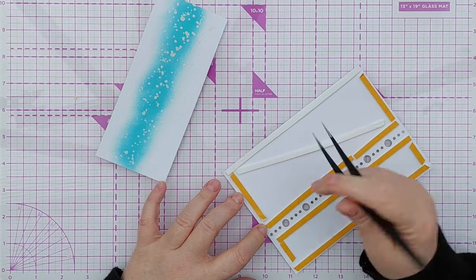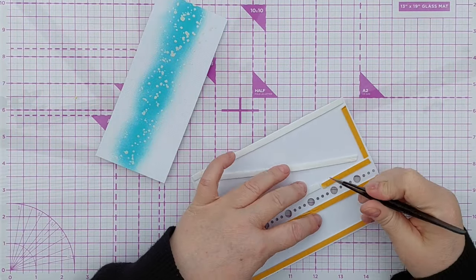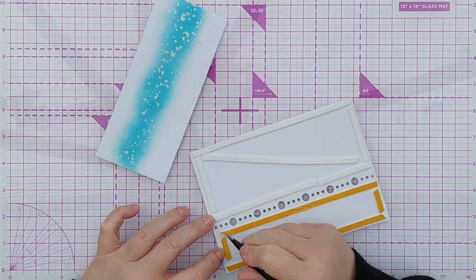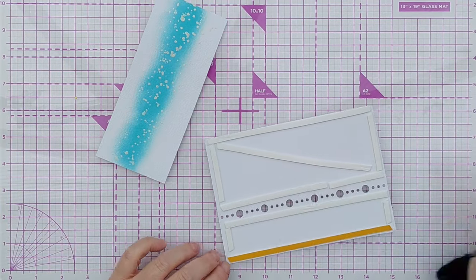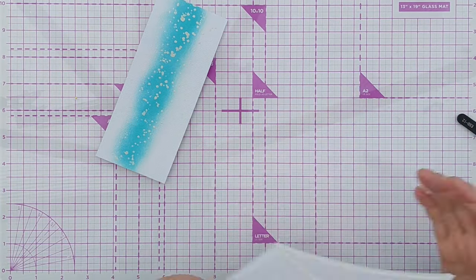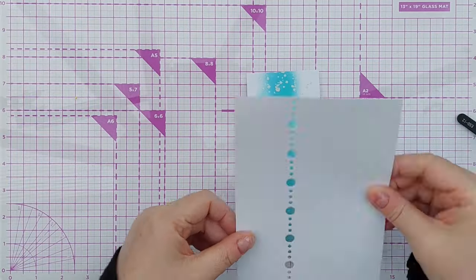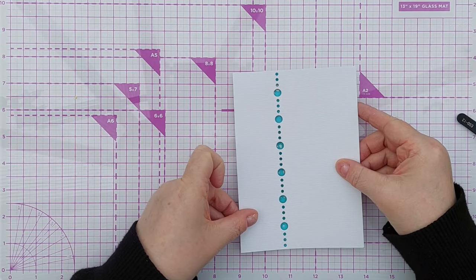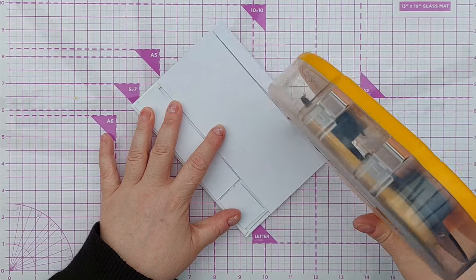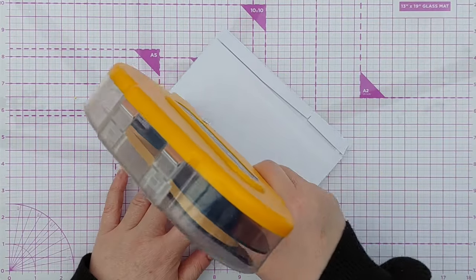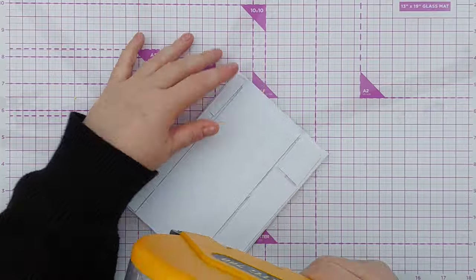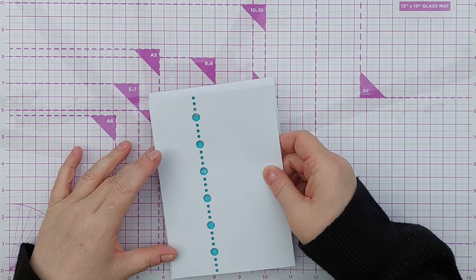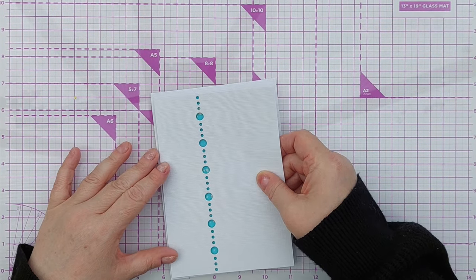So I added some foam tape to the back of that front panel making sure that it was well supported and then I added the blue blended metallic watercolour panel behind it. After adding a few bits of scrap paper to the back just to keep the whole thing level I used my ATG tape runner to add the panel to my card blank.